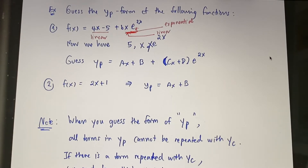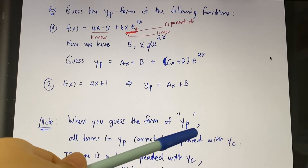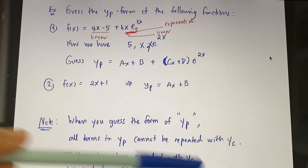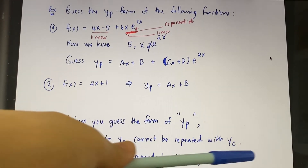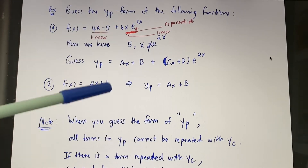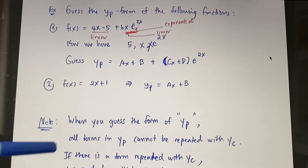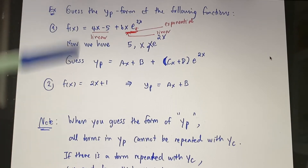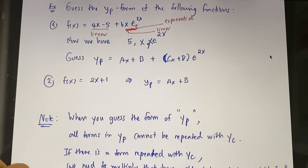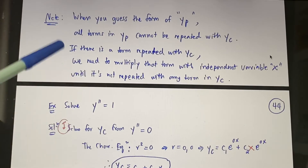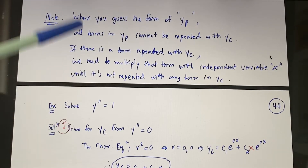Here is an important note you need to be careful about when guessing yp: all terms in yp cannot be repeated with terms in yc. Before guessing yp, find yc first. Once you know yc, make sure no term in yp matches any term in yc. If a term is repeated, multiply that term by the independent variable x until it no longer appears in yc.